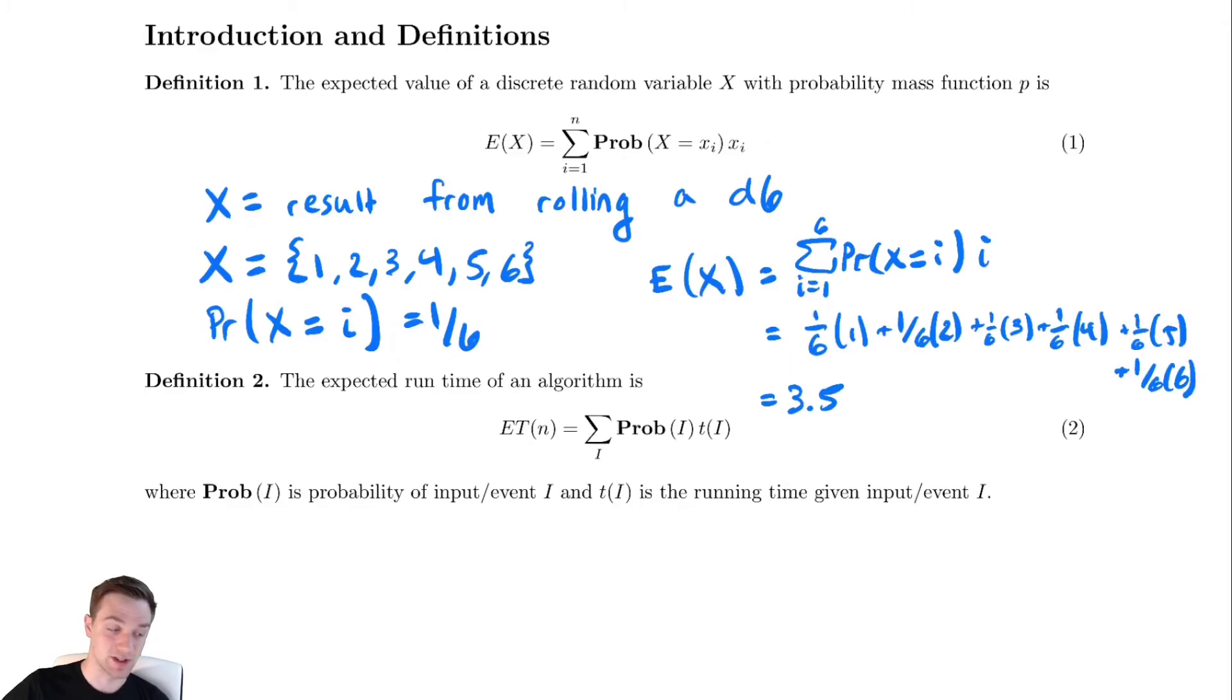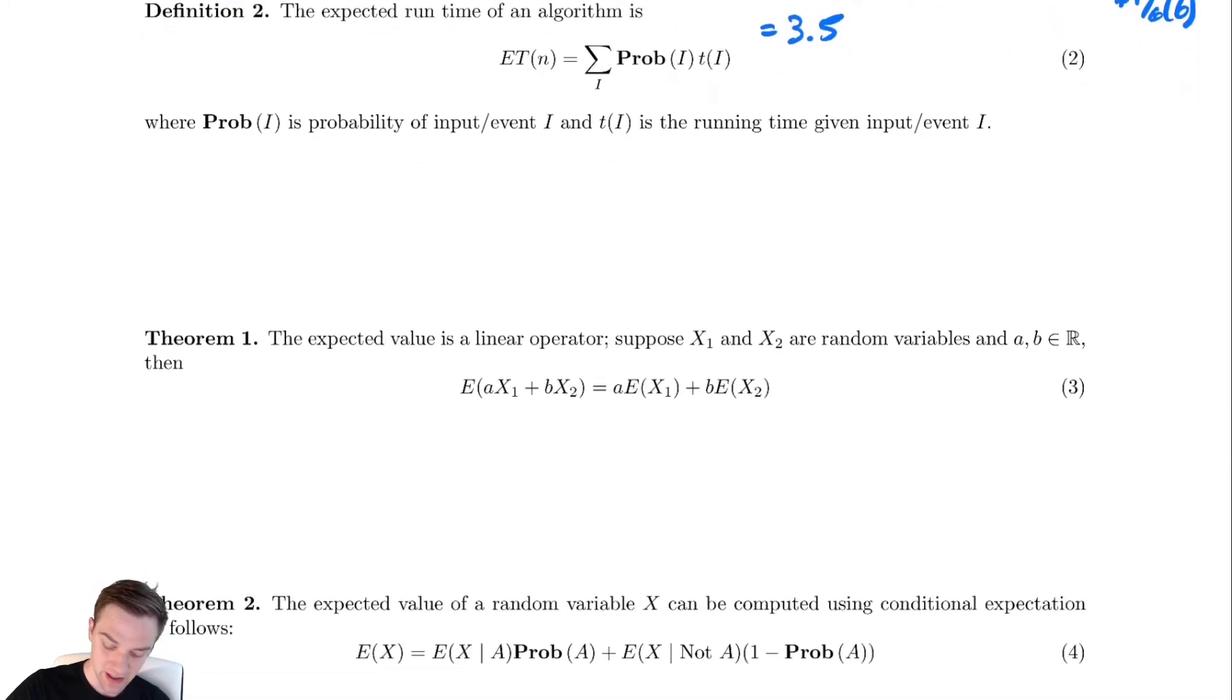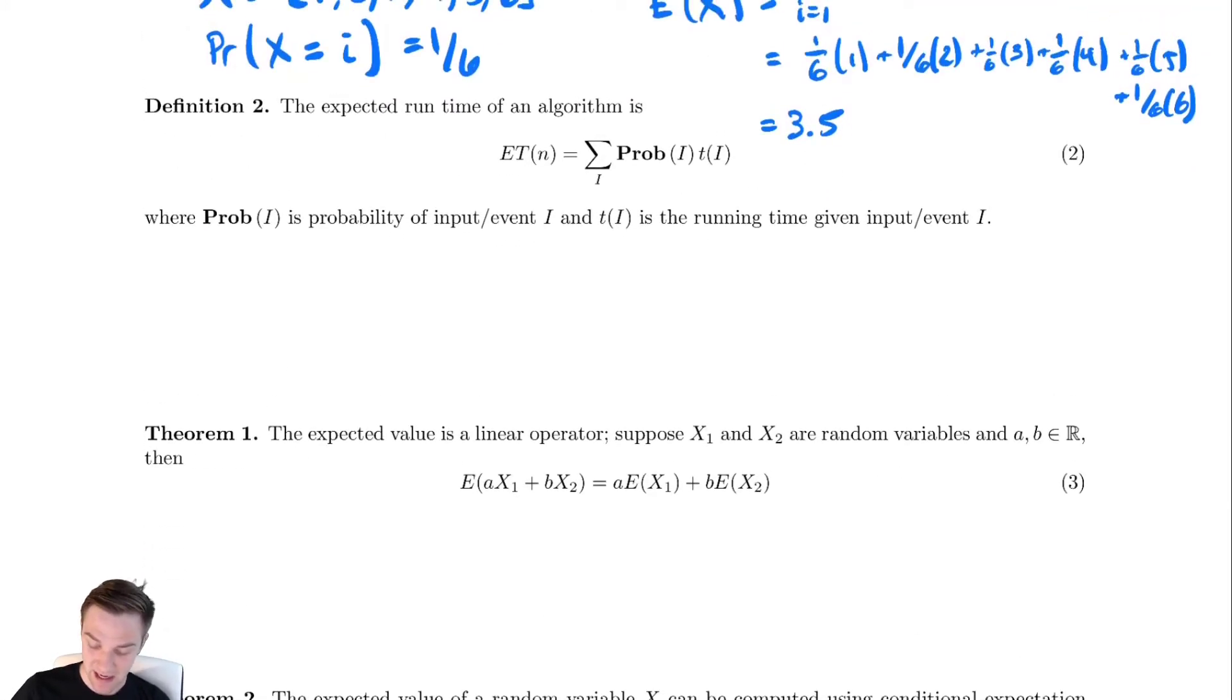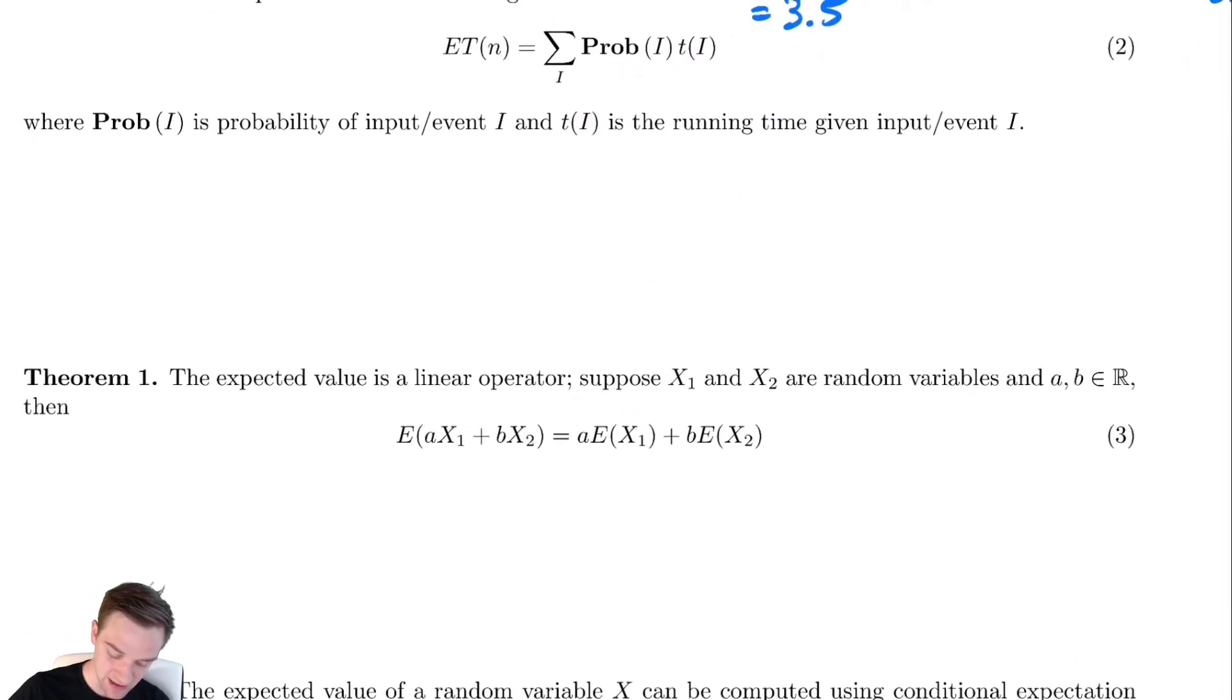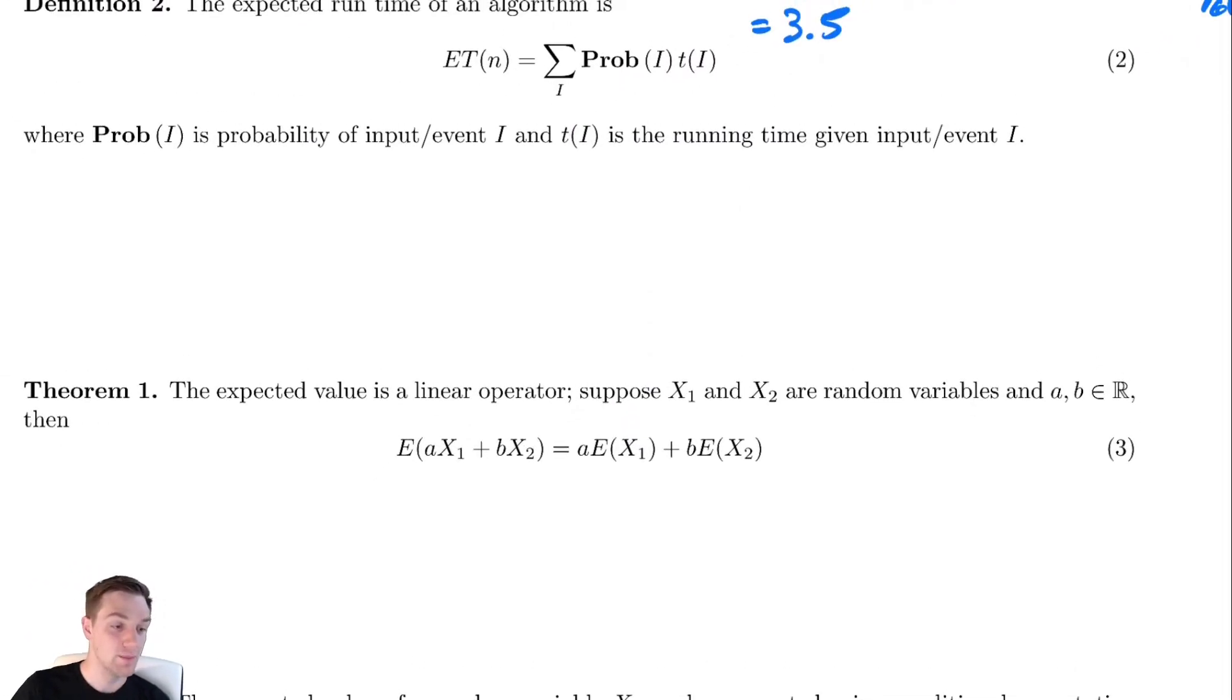Our last definition we're going to talk about is something called linearity. This is a property we've used many times already in different contexts. It looks kind of fancy here, but it is a nice property of expected values.